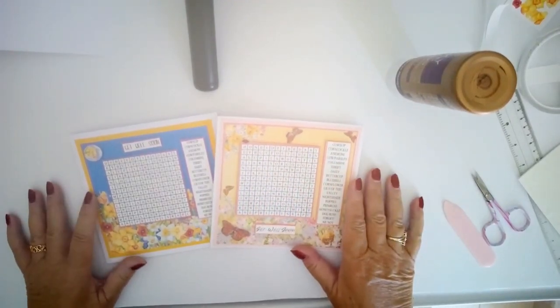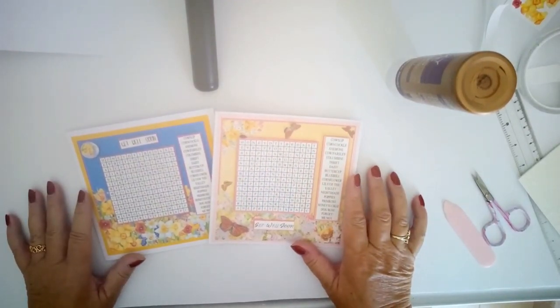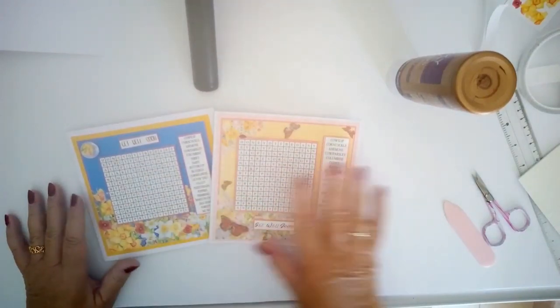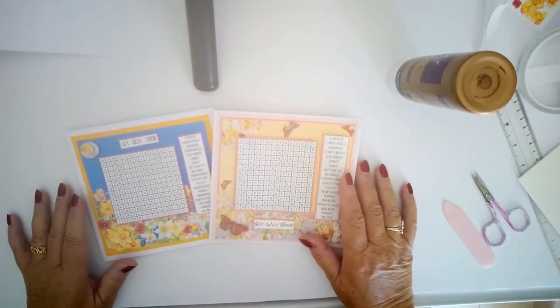There are two designs. They're both flowers word search cards. This one is bright and this one's muted and they're by Lorraine Appleby.